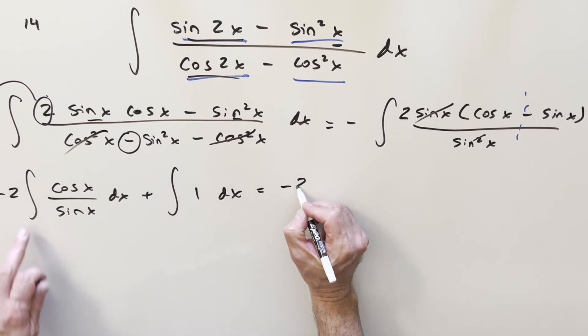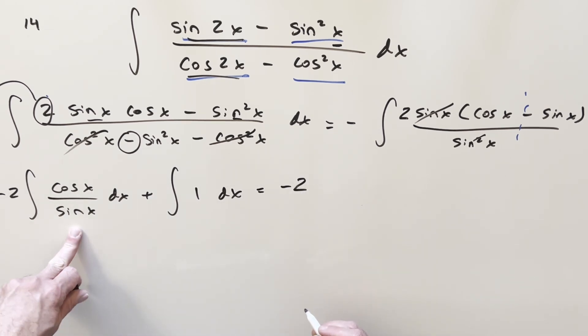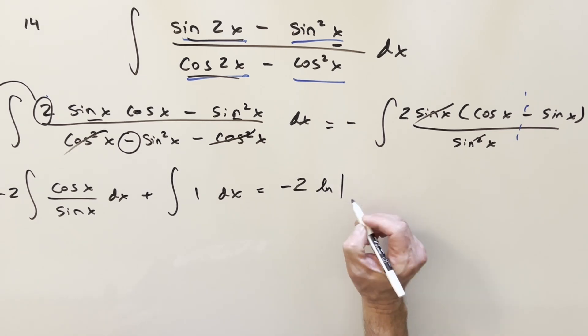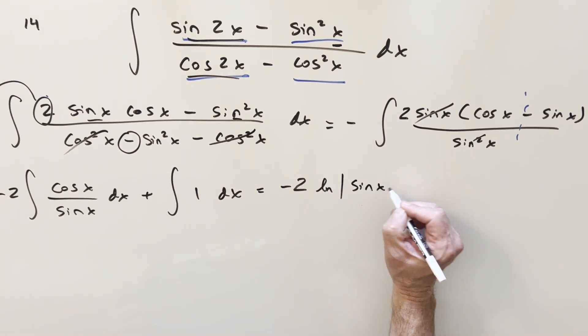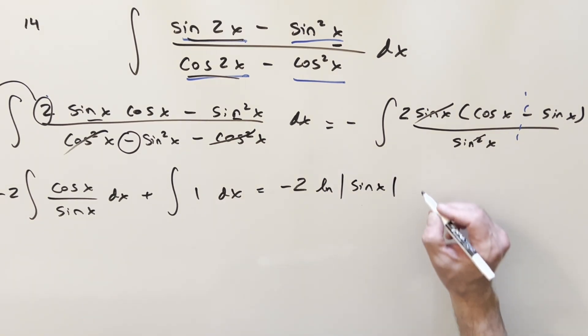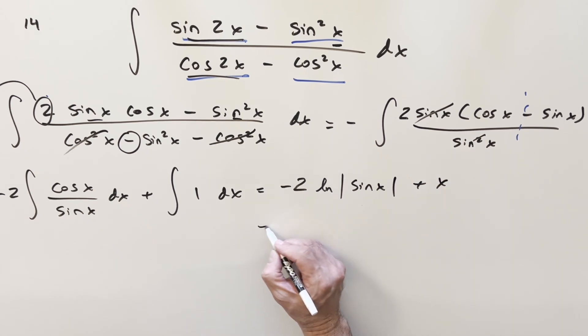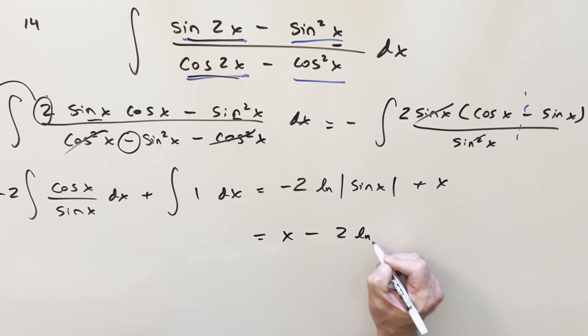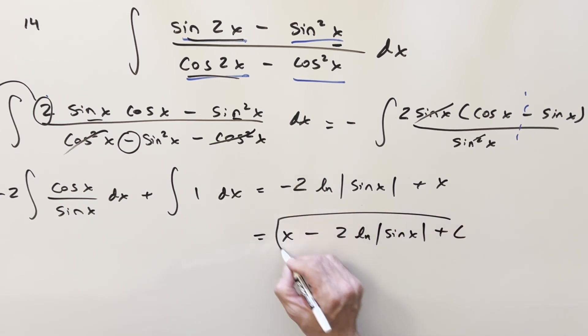And now I'll just go ahead and integrate it. We have our minus 2 up front here. This one, derivative of sine is going to be cosine. Or you could remember the formula for integrating cotangent. Either way, this is just going to be natural log absolute value sine x. Integrating 1 is just going to be a plus x. So for my final solution on this, we just have x minus 2 natural log sine x. Add a plus C. And that's it.